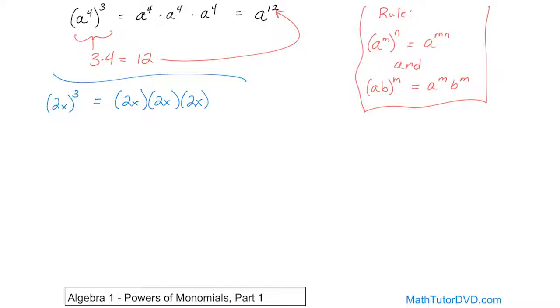Now, how would you do that? 2 times 2 is 4, 4 times 2 is 8. So what you would get is 8, and then what you have is x times x times x. You add the exponents together, giving you x to the third power. This is the answer, and this is the way you would do it if you wrote it all out.